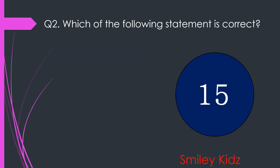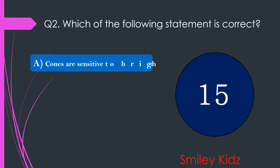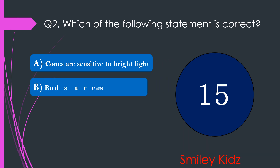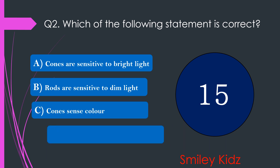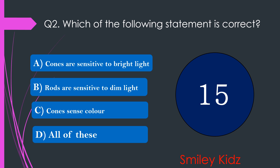Question number 2. Which of the following statements is correct? The options are A. Cones are sensitive to bright light, B. Rods are sensitive to dim light, C. Cones sense color, or D. All of these. Your time starts now.